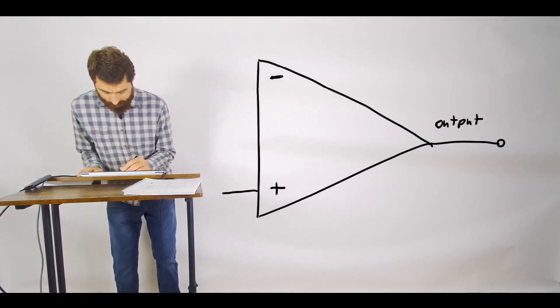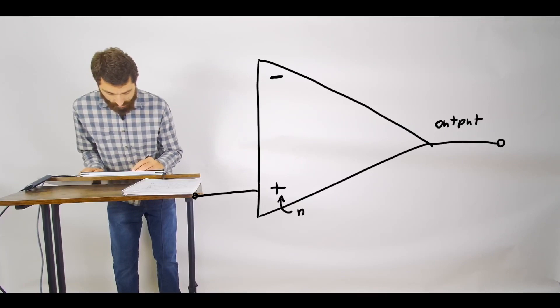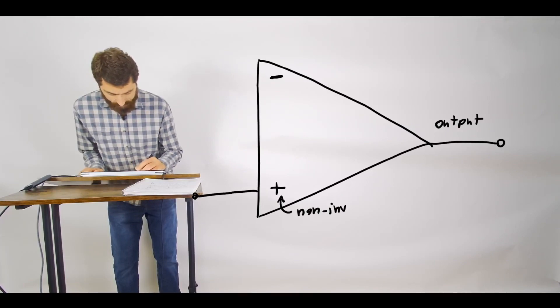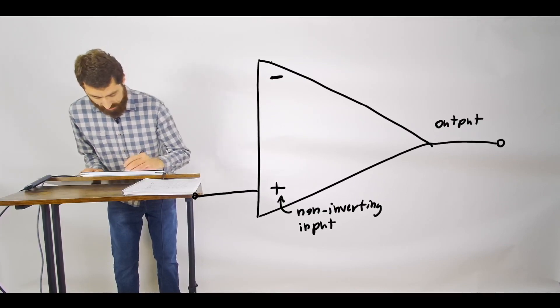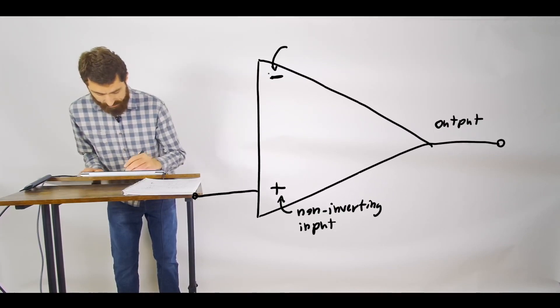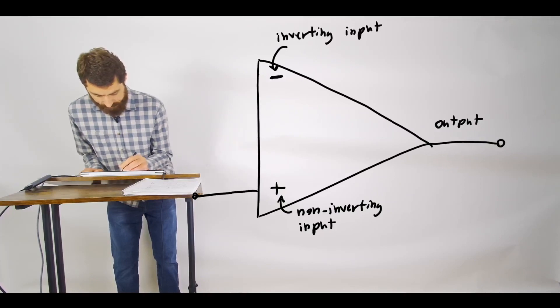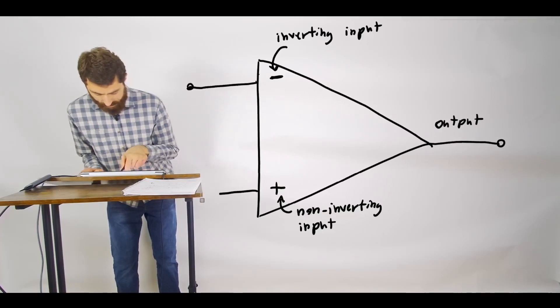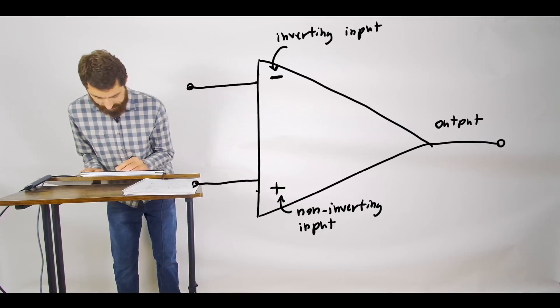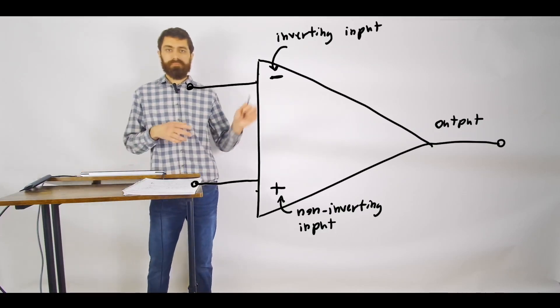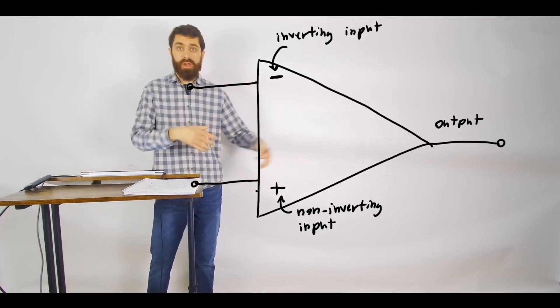So this would be our non-inverting input and this would be our inverting input. I'm going to sketch this lead a little bit higher up here just to make it easier to draw what's inside. So that's essentially the symbol for an op-amp.